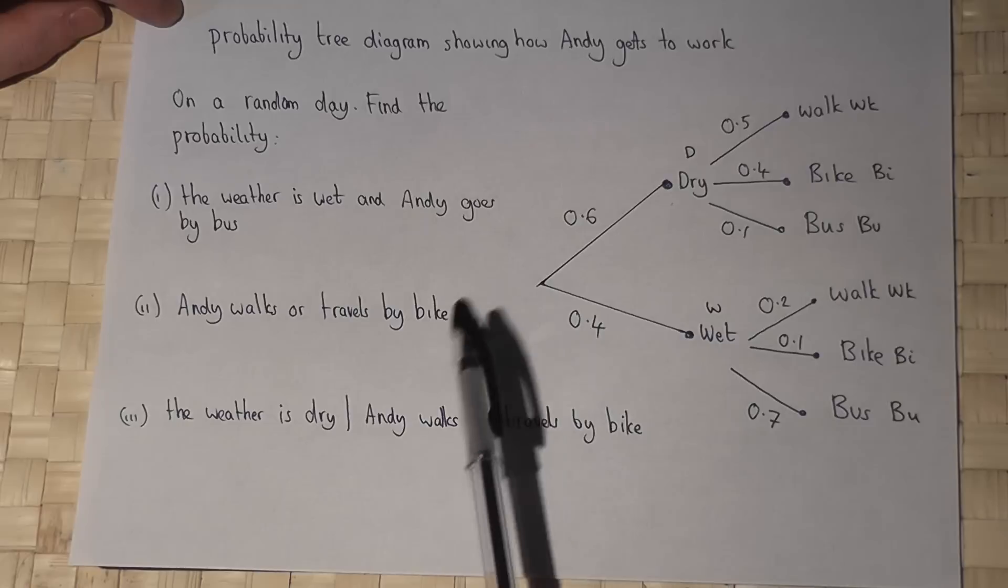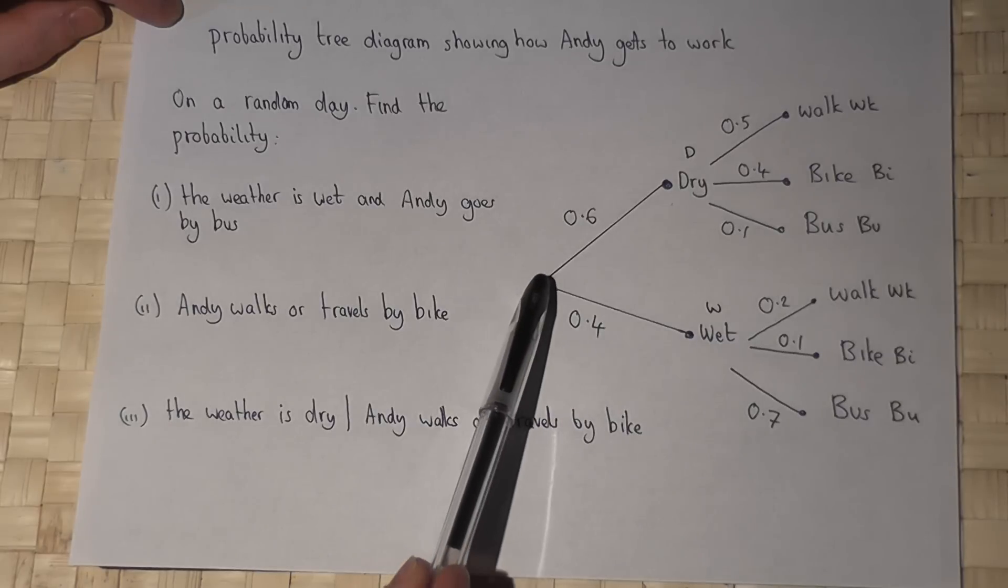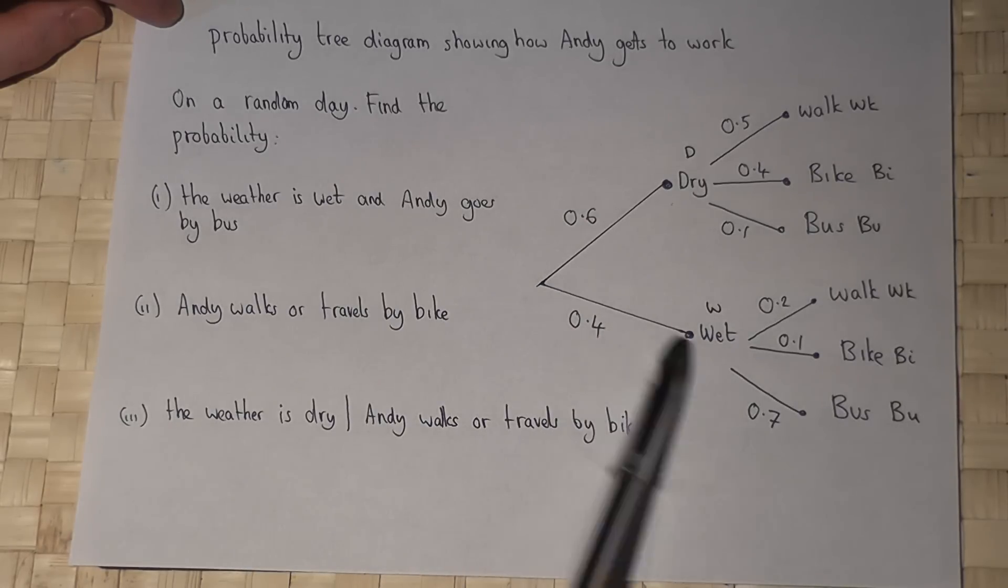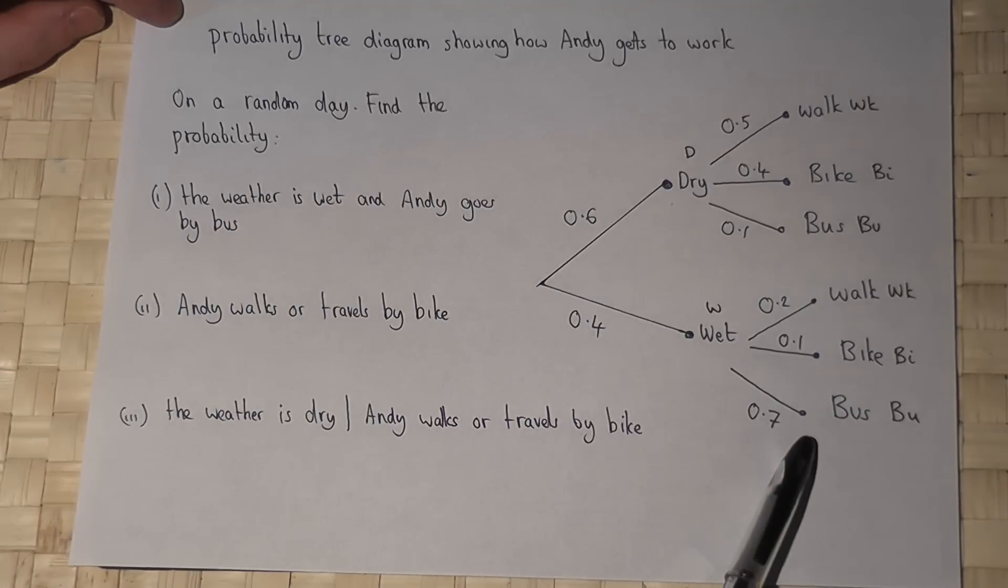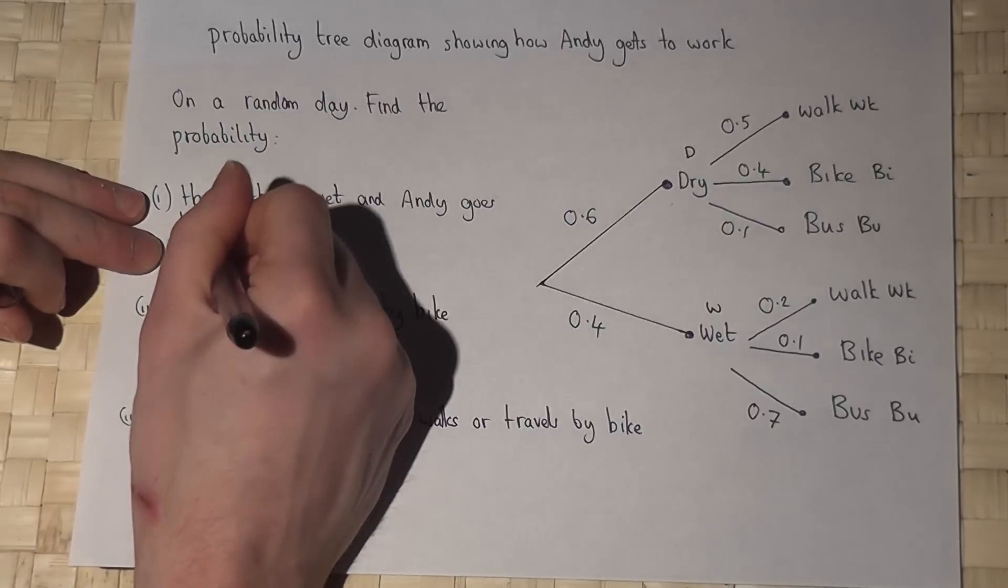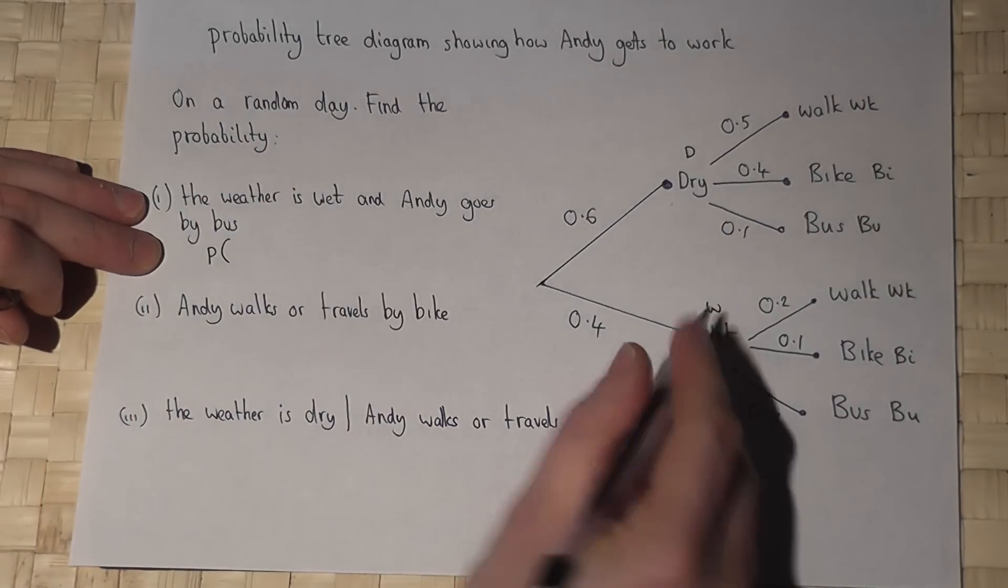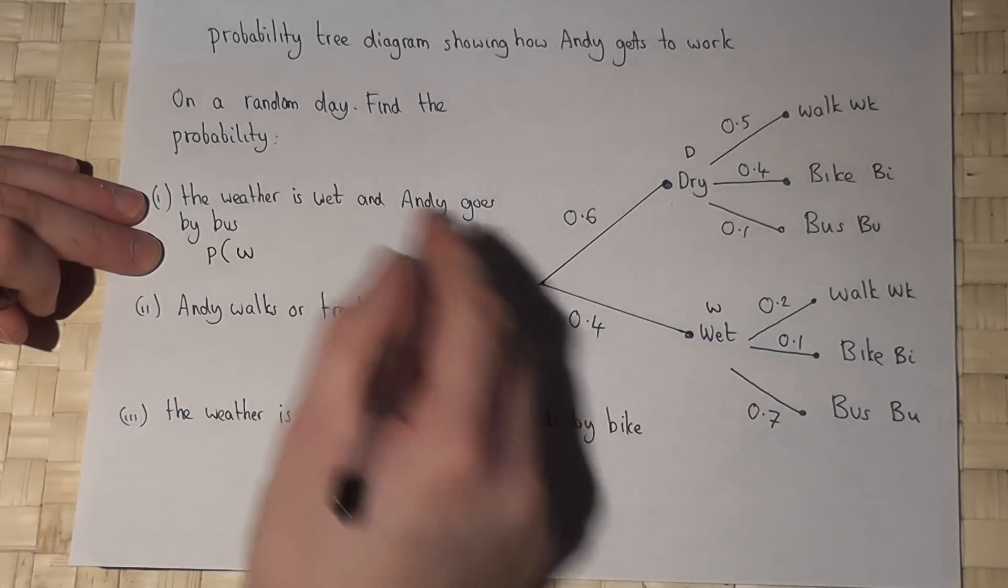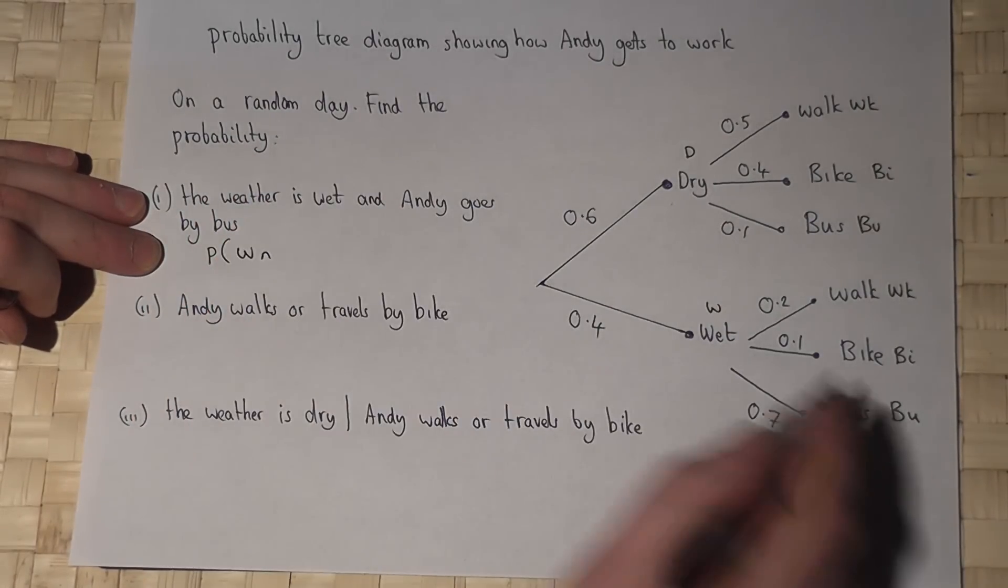Now on this tree diagram, wet and then by bus is that route through the tree diagram. So the chance of it being wet and Andy goes by bus...